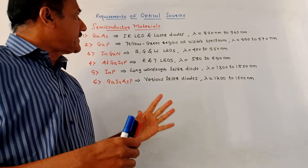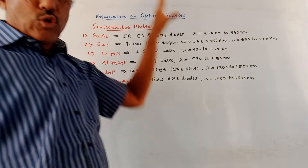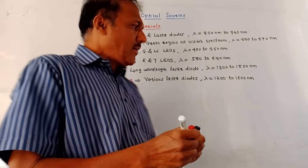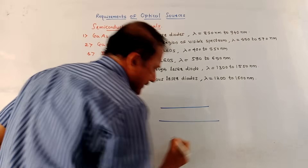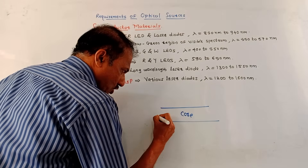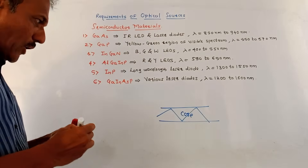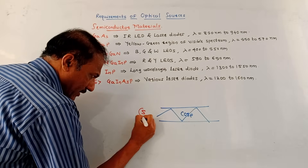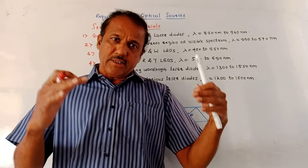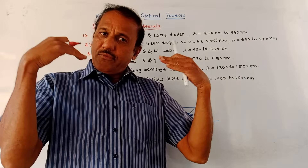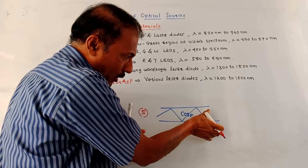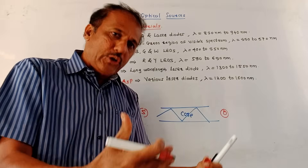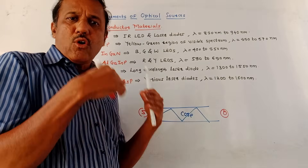Hello and welcome back to this channel. This topic is requirements of optical sources. In the earlier video, we discussed the detailed working of fiber optic cable. In fiber optic cable, the innermost layer is the core layer through which actual transmission of light rays takes place. We have to transmit information in the form of light rays, so at the input end we must connect one optical source. The source converts the information into light rays, which travel through the fiber optic cable, and at the other end we use a detector to detect the signal and convert it back into electrical form.